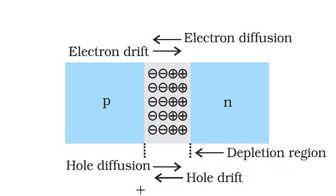Because of these fixed charges in the depletion region, there is an electric field from the positive to the negative. Remember, it is not from P to N. It is from positive charges to the negative charges.